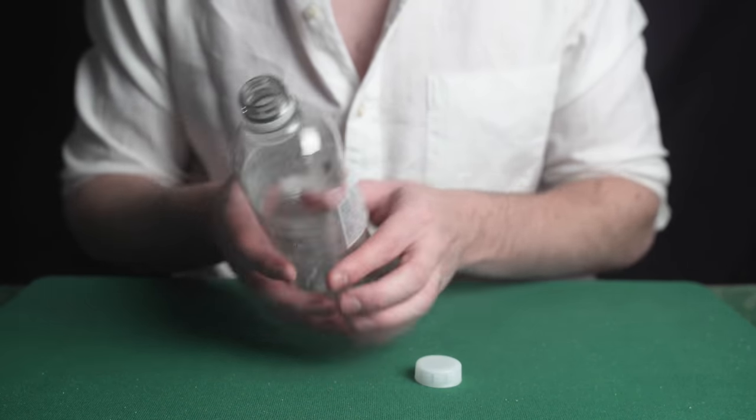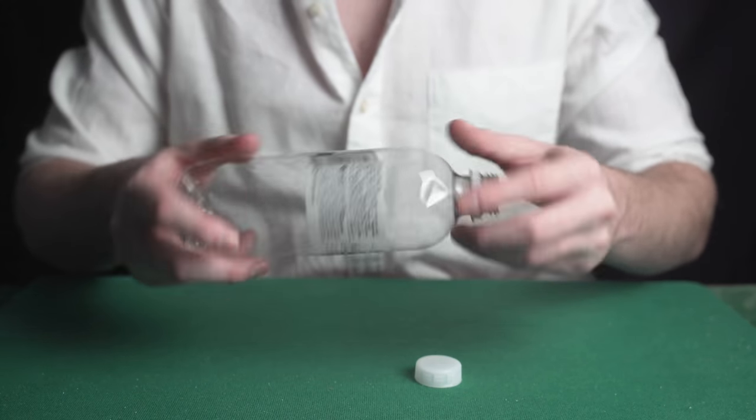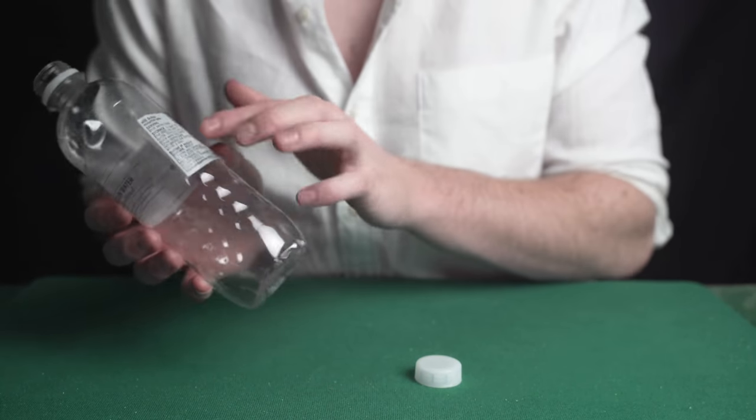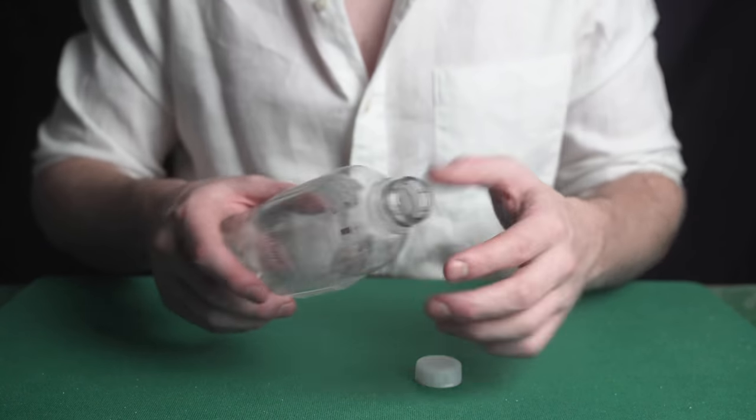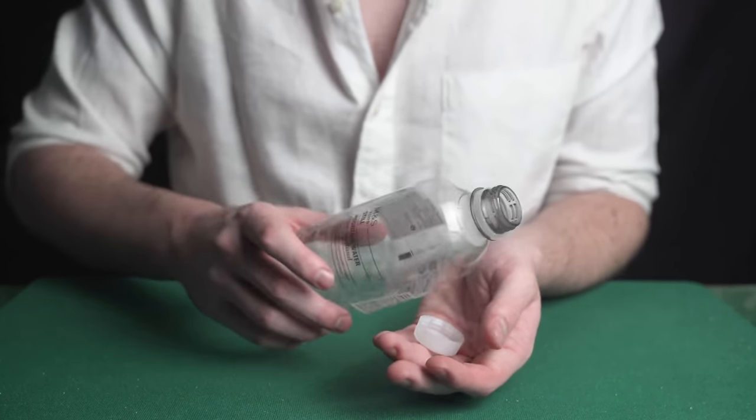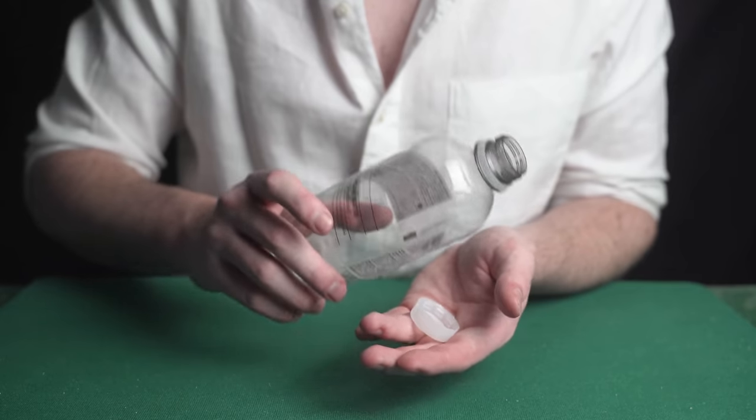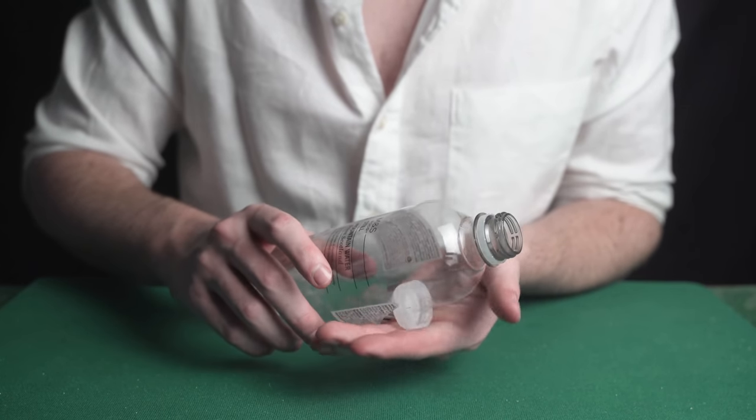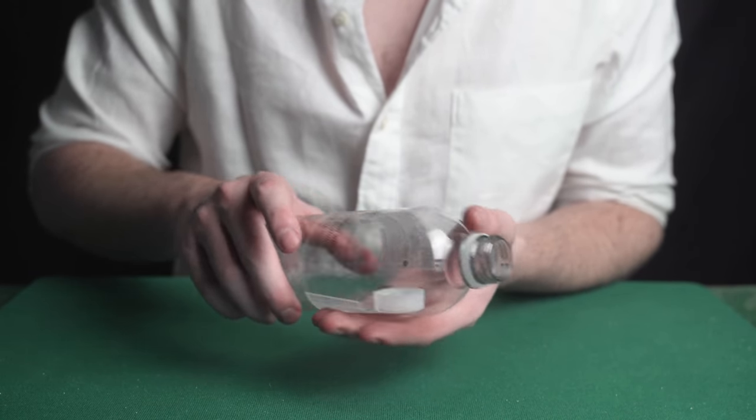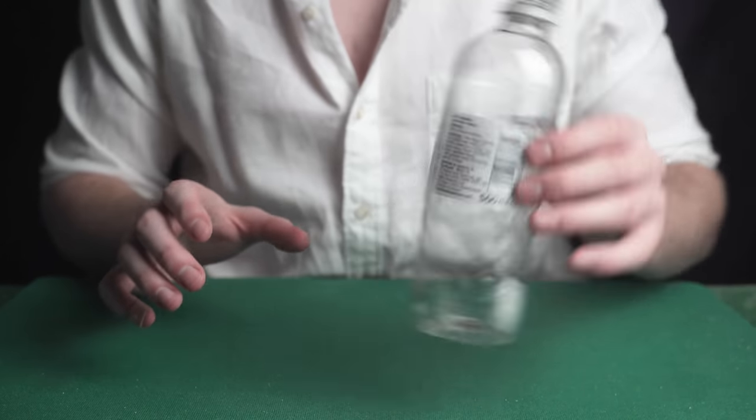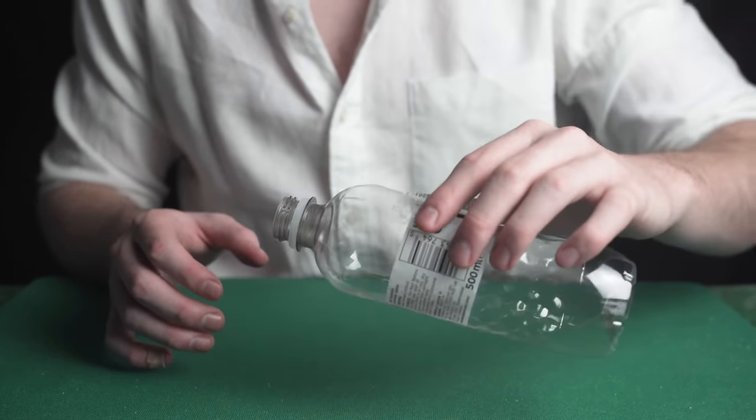Now from here the rest of the trick is self-working. You can display the bottle as normal. No one will ever see the hole because it's covered by the wrapper and it looks completely normal. Then place the cap on your hand and tap once, twice and then on the third tap all you're doing is pushing the cap through the hole into the bottle and then you can display that it's really in there.